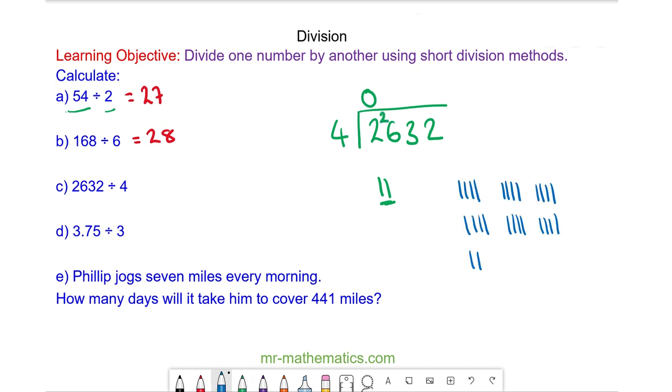Here we have 26. You can see there are 6 groups of 4 with 2 left over.